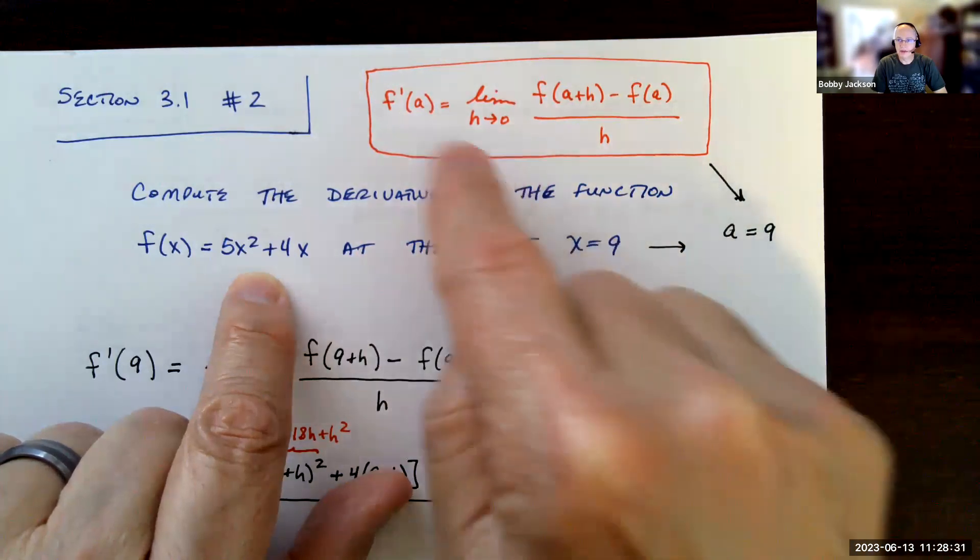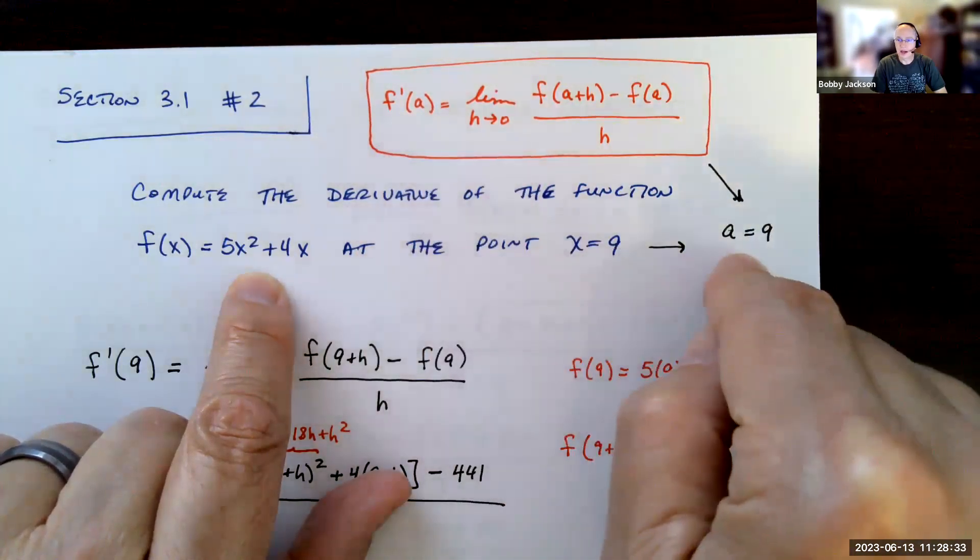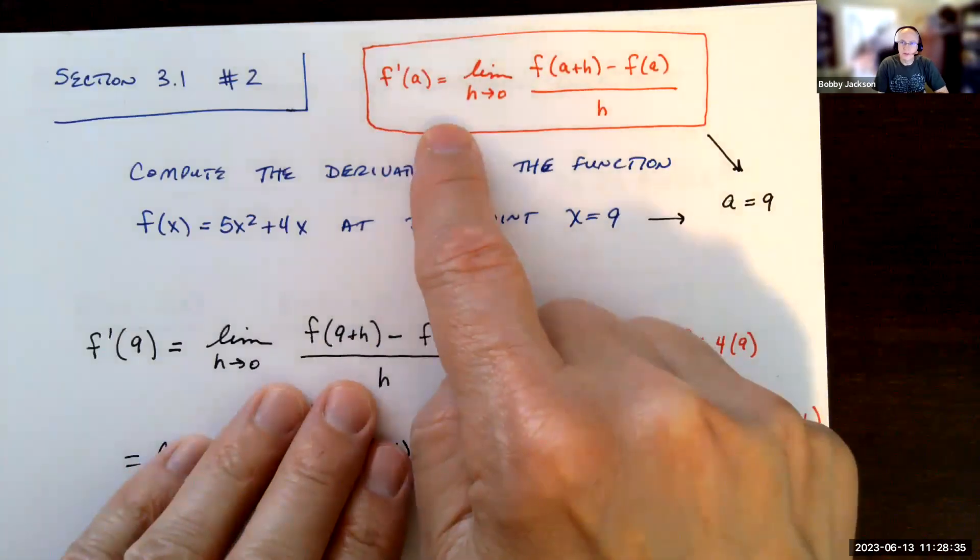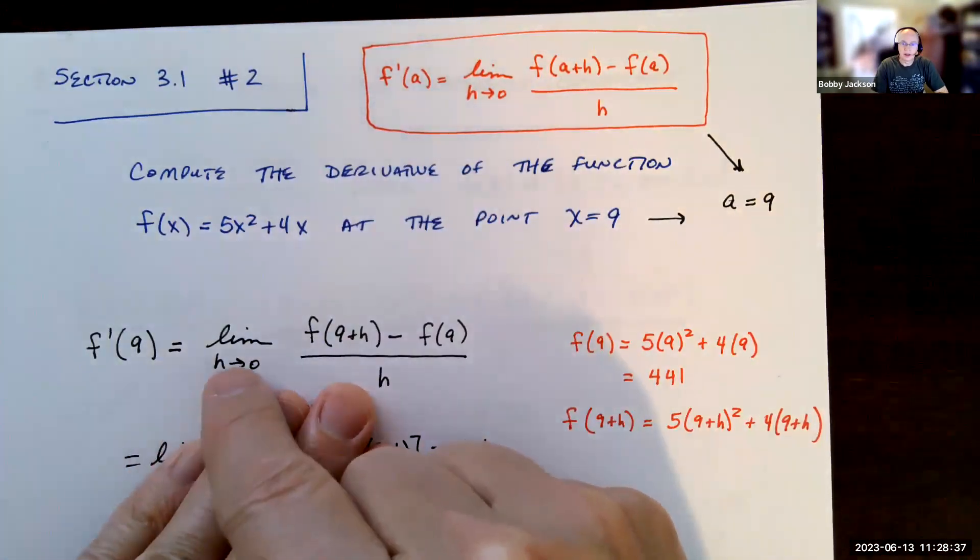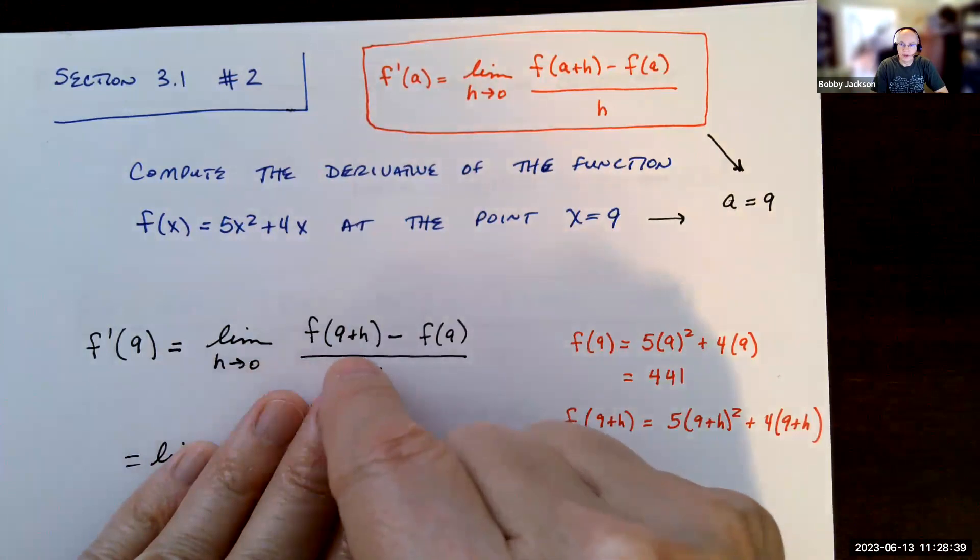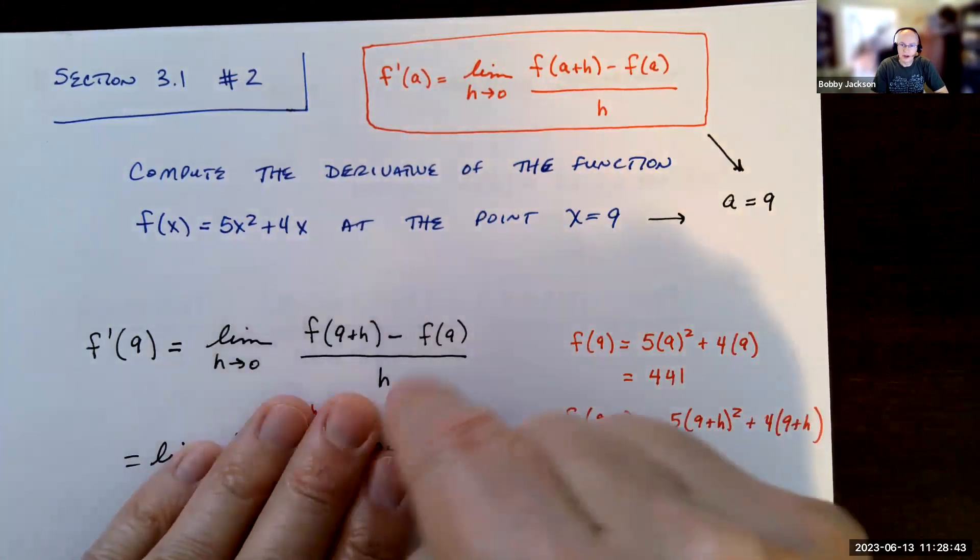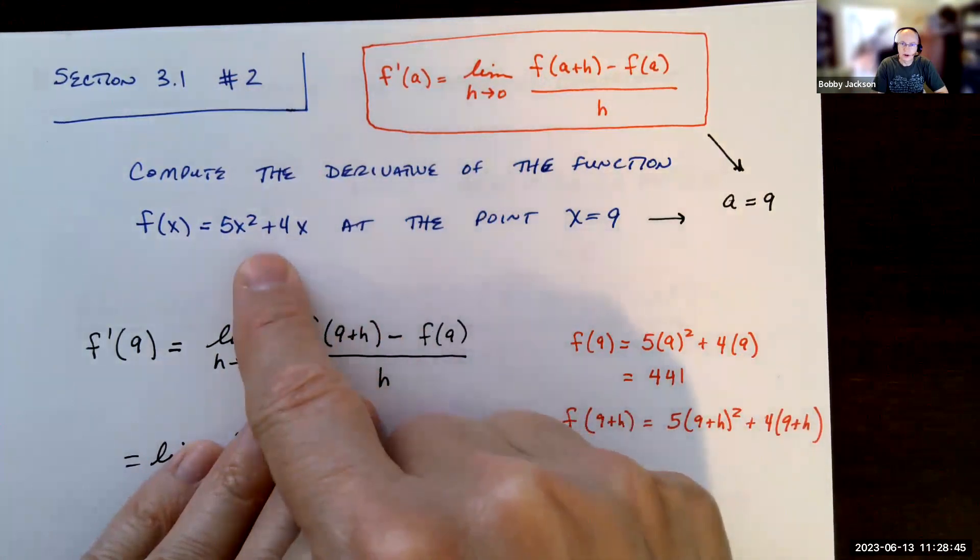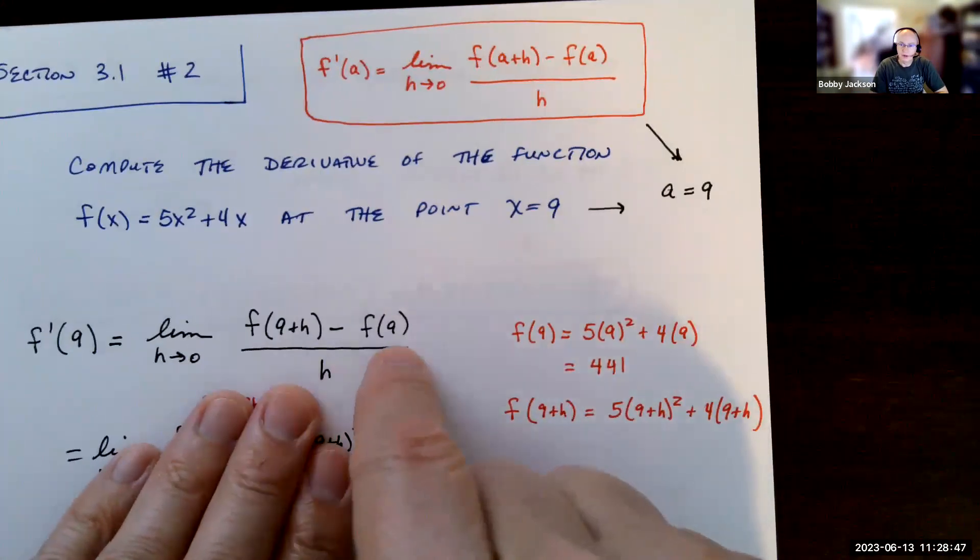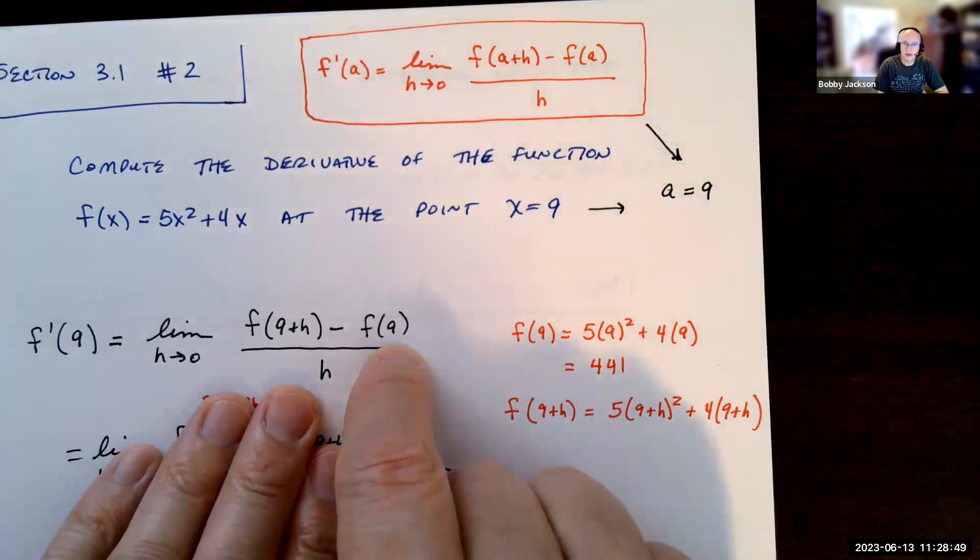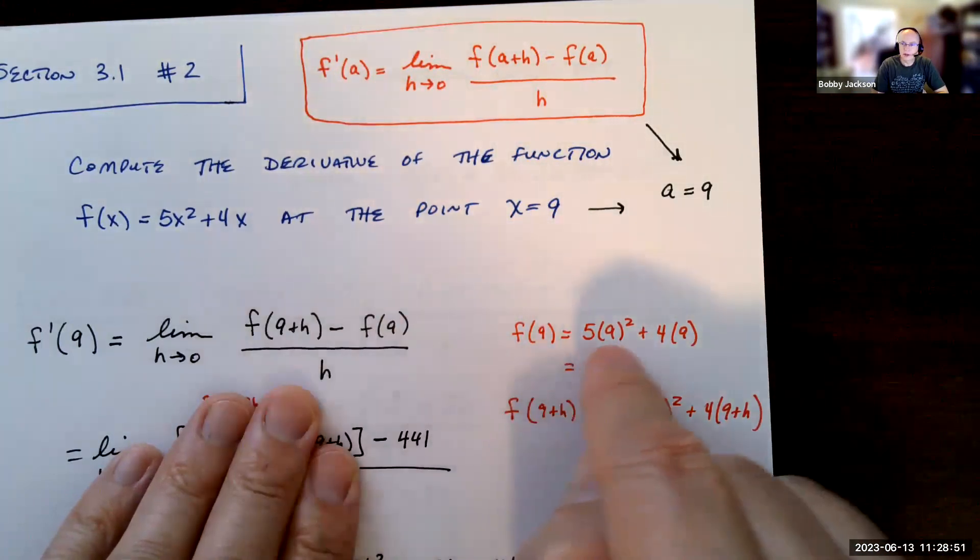Notice the value of a - we're finding it at nine, so the value of a here is going to be nine. When I plug in nine into my derivative formula, I've got the limit as h goes to zero: f(9+h) minus f(9) divided by h. So this is how I'm going to find the derivative. Here's my function.